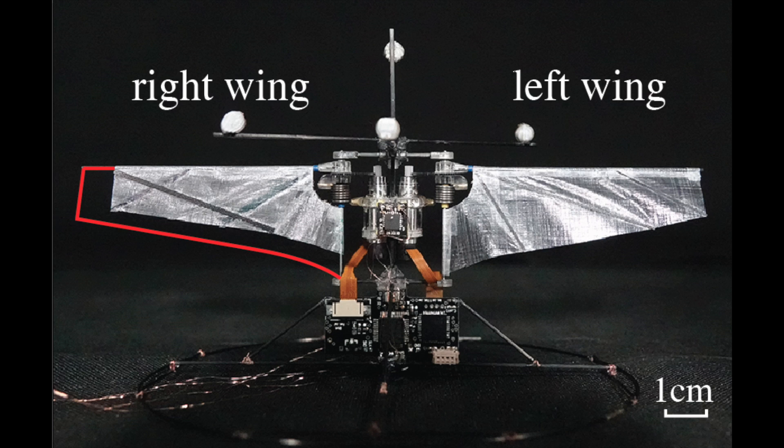We also assessed whether the robot can maintain stable flight with damaged wings. Even with a significant portion of the wing missing, the robot was able to control itself.